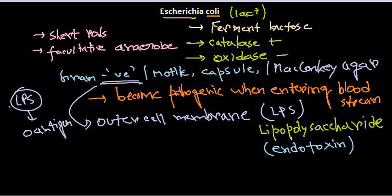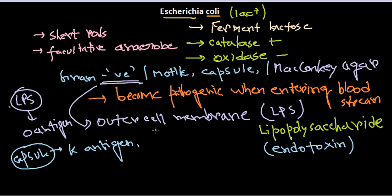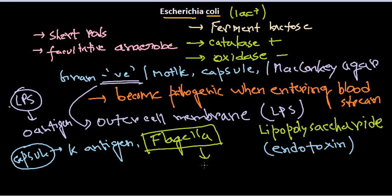The antigens that are present in the capsule layer are called K antigen. The antigens present in the flagella are called H antigen. So depending upon the presence of these antigens — O antigen, K antigen, and H antigen — we can give different names to Escherichia coli strains. The nomenclature of Escherichia coli comes from this kind of antigen classification.